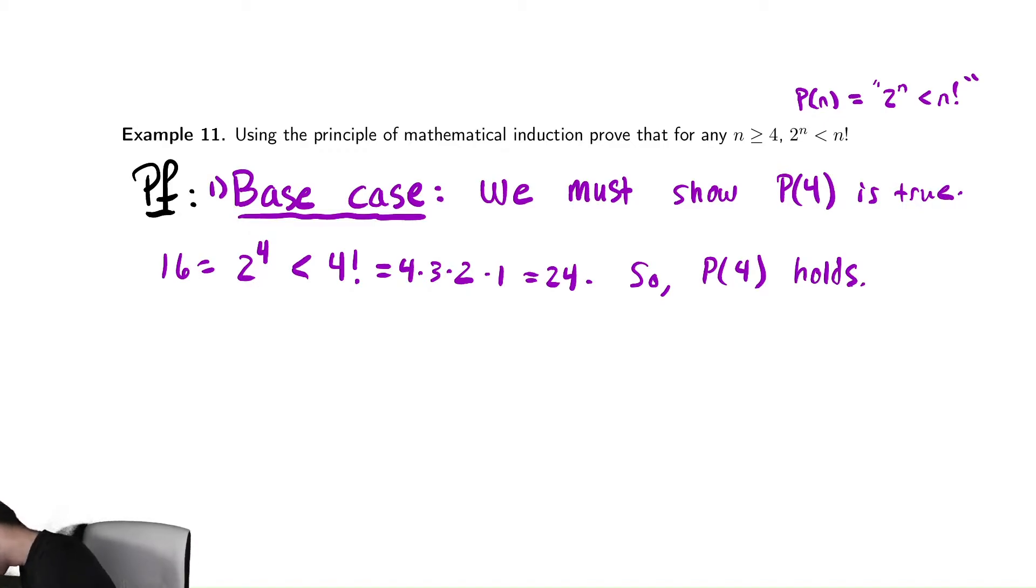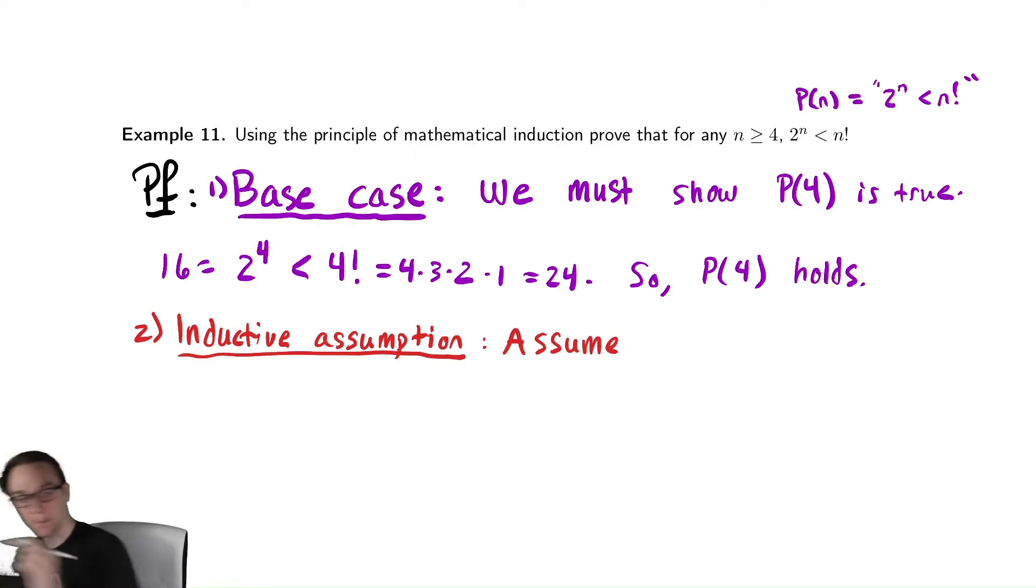Step number two is to make our inductive assumption, which is we are going to assume that P(n) is true. Sometimes it can be useful to use a different letter here, so I'm going to say assume that P(k).